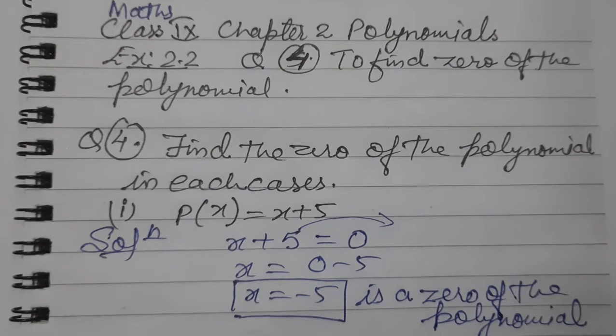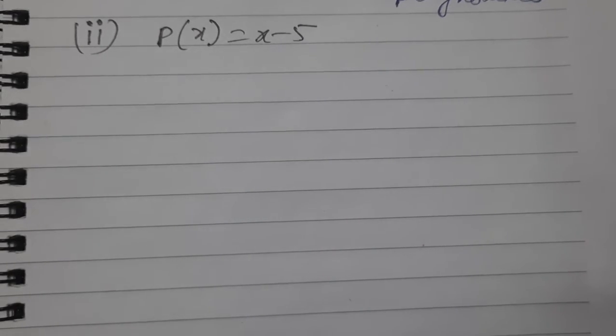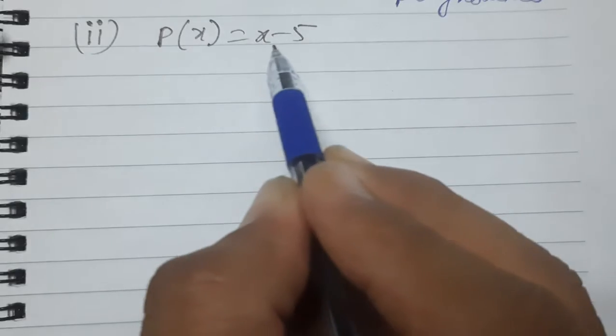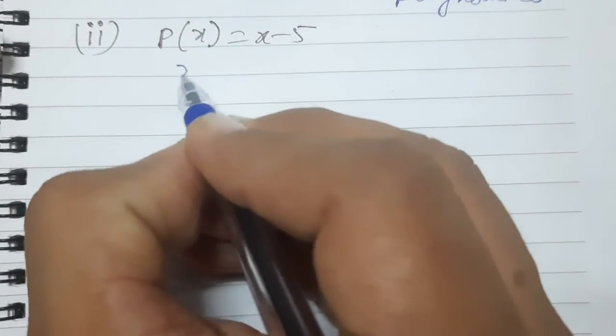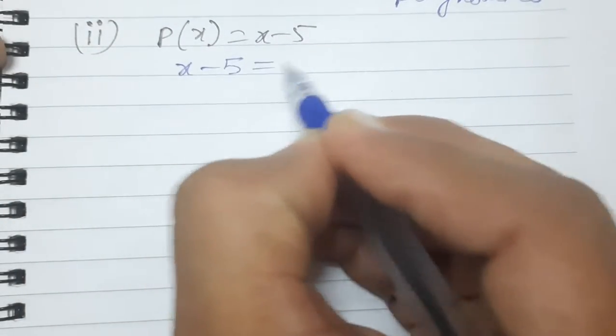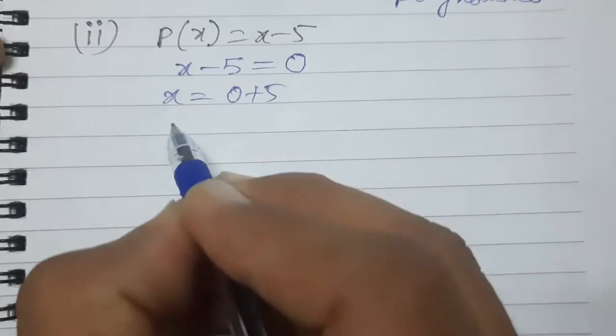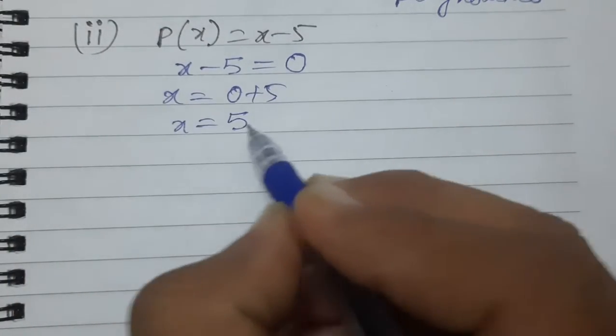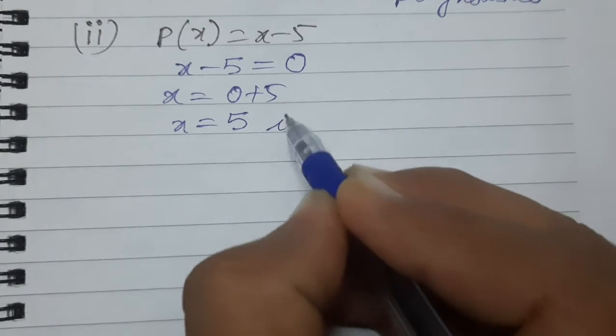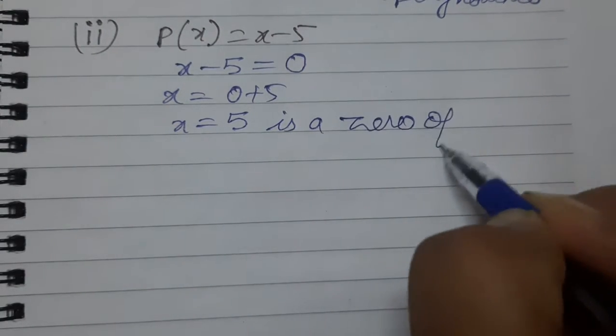The second one: P(x) equals x minus 5. Again, same thing we need to do. Put this equal to zero, and this will give us x equal to 5. Therefore, x equal to 5 is the zero of the polynomial.